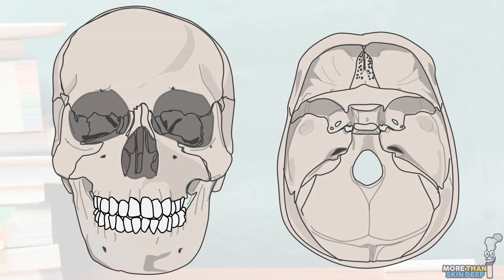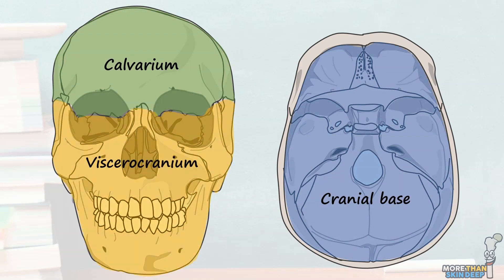The skull is an instantly recognisable part of the human body, but most will know little about its anatomical makeup. The skull is actually composed of 22 bones, which are themselves arranged into three key regions: the domed calvarium, the cranial base, and the viscerocranium. As the calvarium and cranial base enclose the brain, they are often discussed together as the neurocranium. Except for the mandible, every bone in the skull is joined together by completely immobile suture joints, which act only to hold the bones together in rigid alignment.